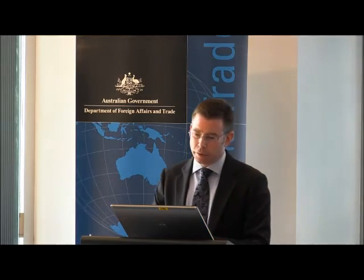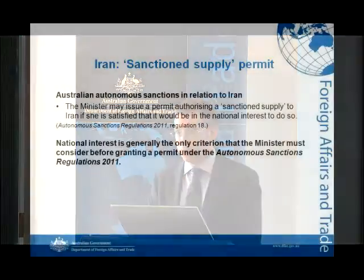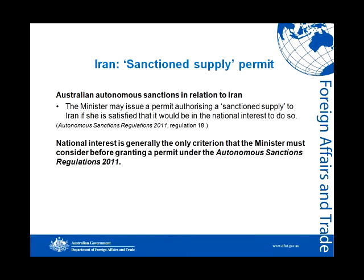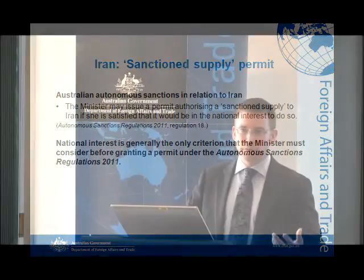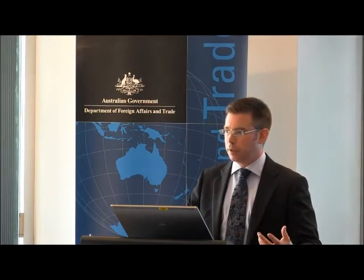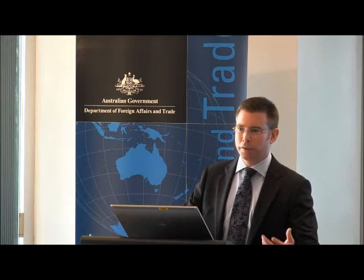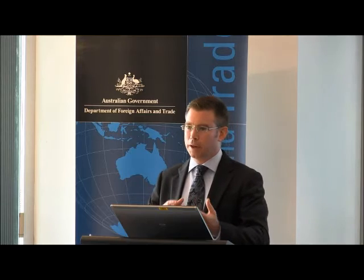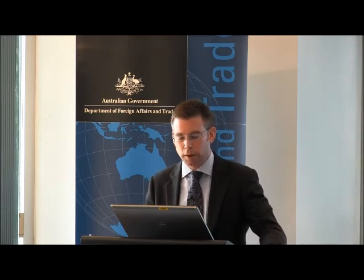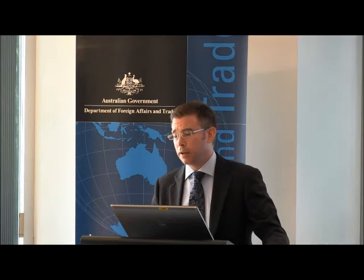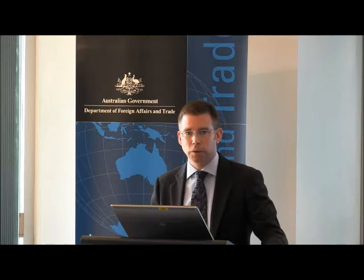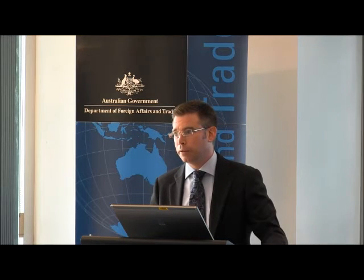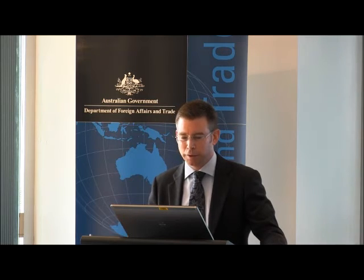The good news is that for Australian autonomous sanctions in relation to Iran, it is significantly more straightforward for us to grant a sanctions permit for a sanctioned supply. The only criterion the Minister needs to consider is whether it would be in the national interest to grant such a permit. If you remember, Australian autonomous sanctions are an instrument of Australian foreign policy — just as we can impose them in a fairly straightforward way, we can also grant permits in a fairly straightforward way if consistent with Australian foreign policy. National interest is generally the only criterion for a permit under any of our autonomous sanctions regimes.